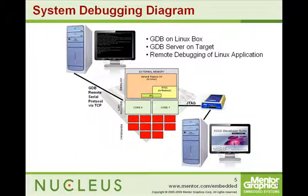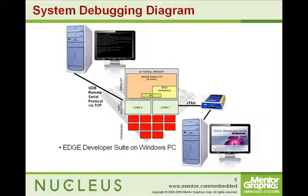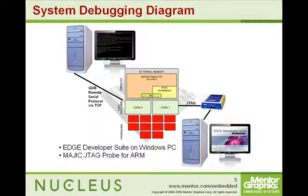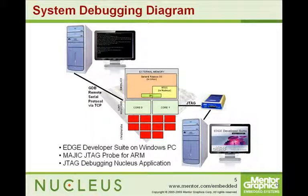For the Nucleus side, we used Edge Developer Suite running on a Windows PC. This, coupled with a Magic JTAG probe for ARM, gave us more flexibility and capability to debug this multi-core system with greater hardware control. So we did JTAG debugging of the Nucleus application and GDB debugging of the Linux application.